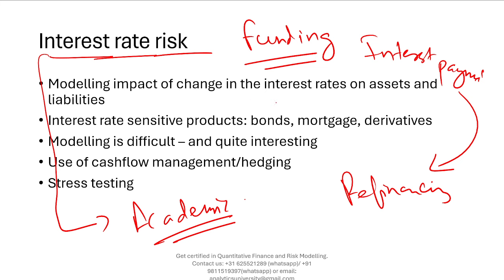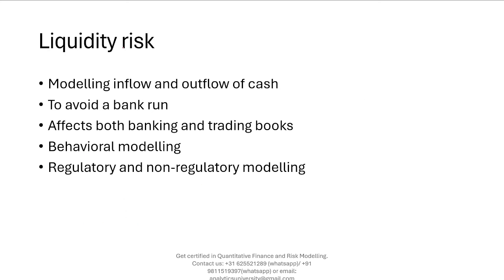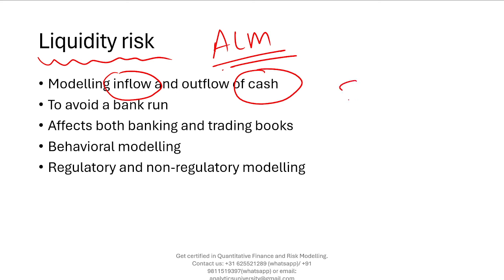Unlike regression-type models used in credit risk modeling, interest rate modeling uses more mathematical and simulation-based models from academic finance. It's quite different from credit risk modeling, and it's an interesting area to explore if you've been working in credit risk for some time. Liquidity risk modeling is also part of ALM risk — it's about modeling cash inflows and outflows, using statistical models to predict how much money the bank will receive and how much it will need to pay depositors.